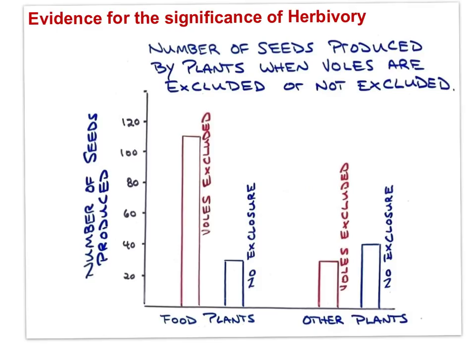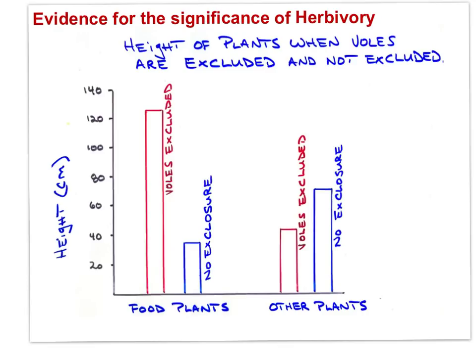Herbivory has a significant impact on plants, and the evidence can be seen in this graph showing the number of seeds produced by plants when voles, a local herbivore, were present or excluded from experimental quadrats. The experiment on the left looked at plants favored by voles, and you can see that plants fare far better when voles are excluded. The experiment on the right looked at plants not typically eaten by voles, showing no significant difference in seed production whether voles are present or excluded.